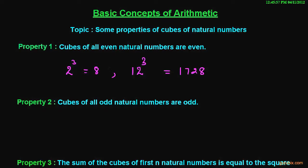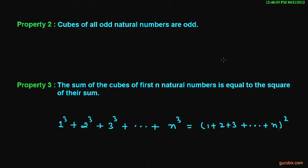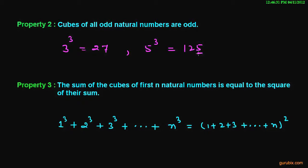So the property is true. The second property is that the cube of all odd natural numbers are odd. Suppose we have an odd natural number 3 and we calculate the cube of 3, then it is 27, and we observe that 27 is also an odd natural number. Suppose we have another odd natural number 5 and if we calculate the cube of 5, then it will be 125, and 125 is also an odd natural number.